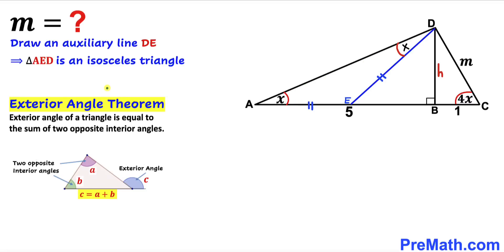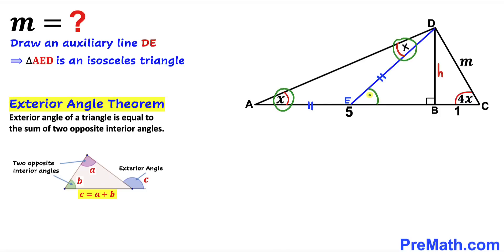Now let's recall the exterior angle theorem. According to this theorem, the exterior angle of a triangle is equal to the sum of the two opposite interior angles, as you can see in this diagram — C equals A plus B. So therefore in our case, this is our exterior angle, equal to the sum of these two opposite interior angles. X plus X is going to make 2 times X.